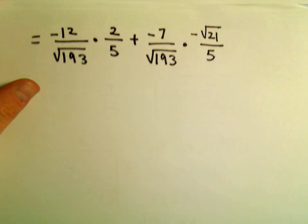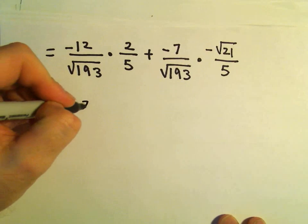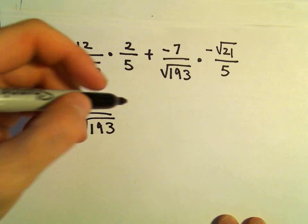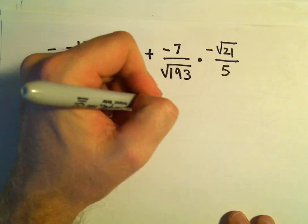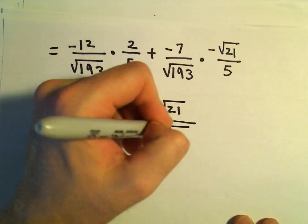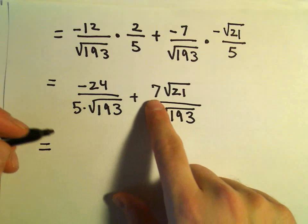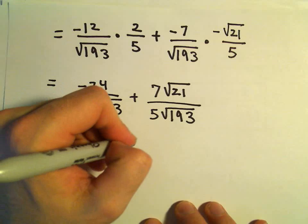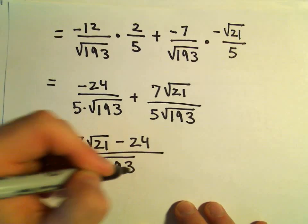Now it's just a matter of cleaning this up a little bit. I may leave this here as an exercise. Negative 12 times 2 is negative 24 over 5 times the square root of 193. We've got a negative and a negative, so that makes a positive: 7 times the square root of 21 over 5 times the square root of 193. We've got our common denominator.